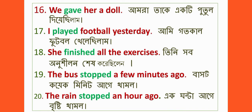Number sixteen: We gave her a doll. Number seventeen: I played football yesterday. Number eighteen: She finished all the exercises. Number nineteen: The bus stopped a few minutes ago. Number twenty: The rain stopped an hour ago.